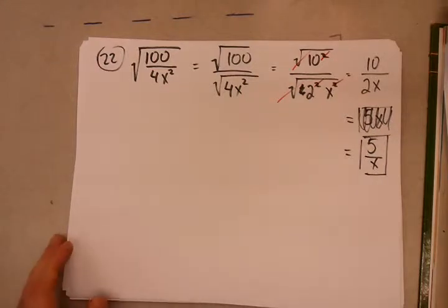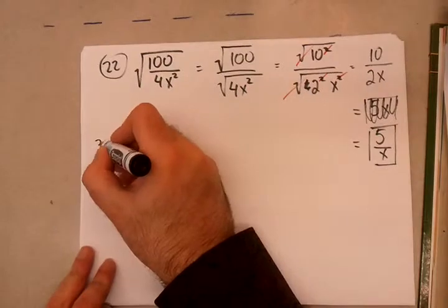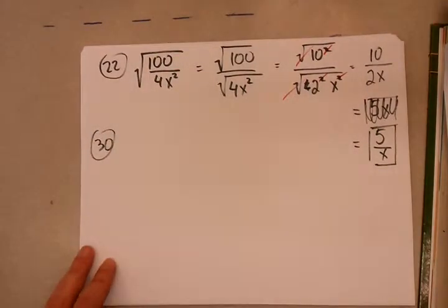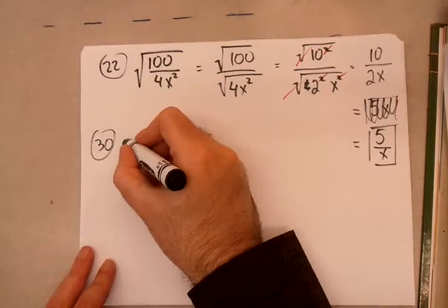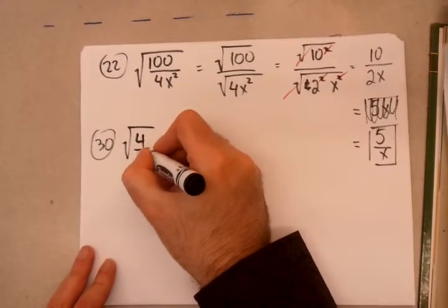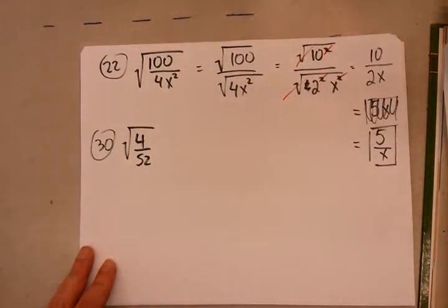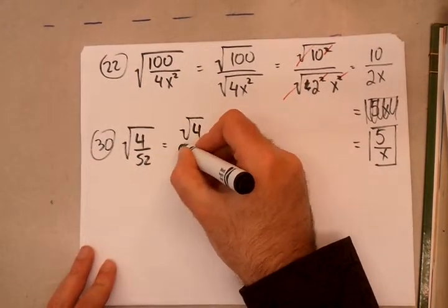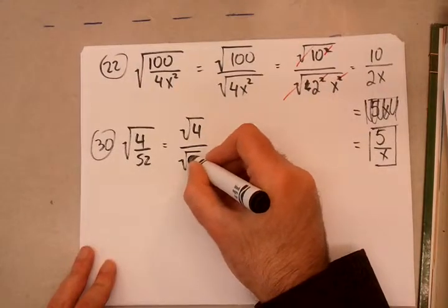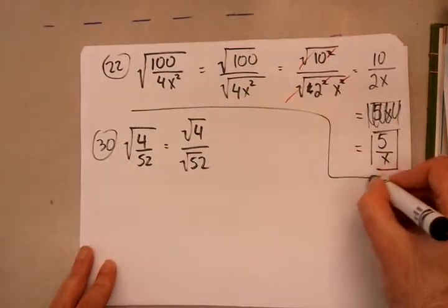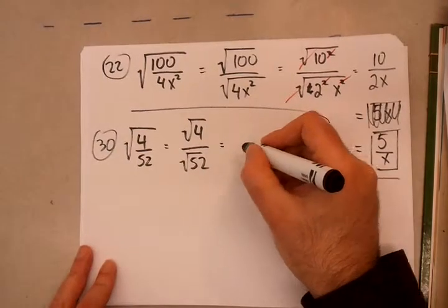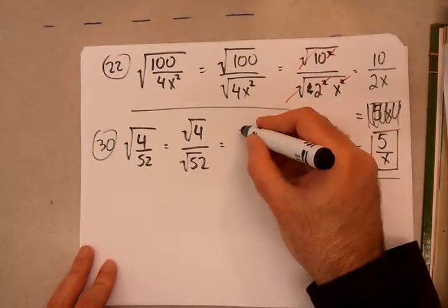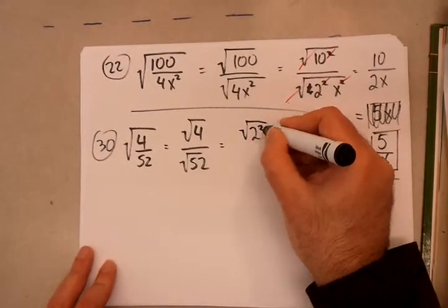Let's take a look at number 30. We have root of 4 over 52. So we have a fraction underneath the square root. Again, we don't like that. So we're going to break it up into root 4 over root of 52. In the numerator, it's a perfect square. Nice and neat. It's a 2 squared.